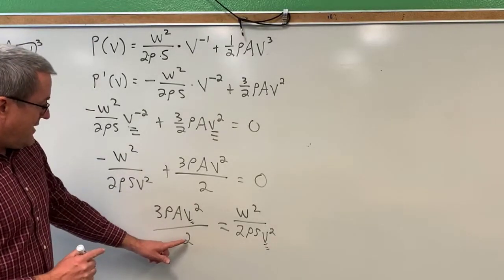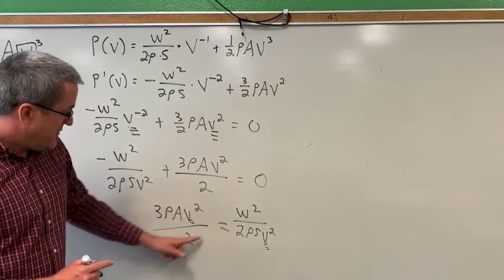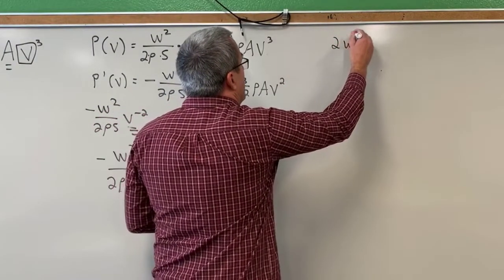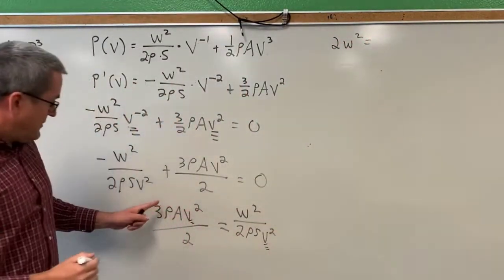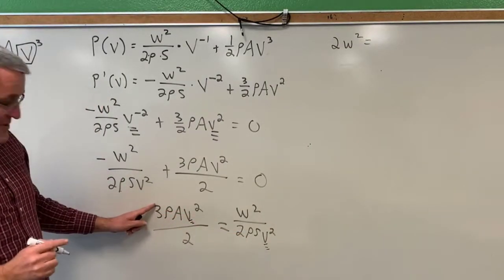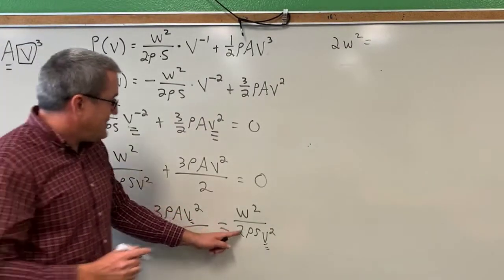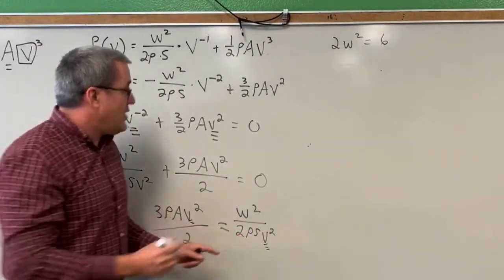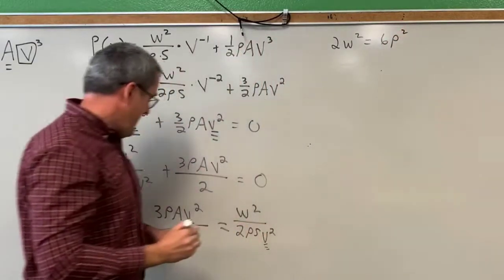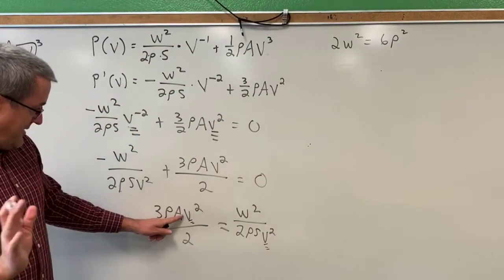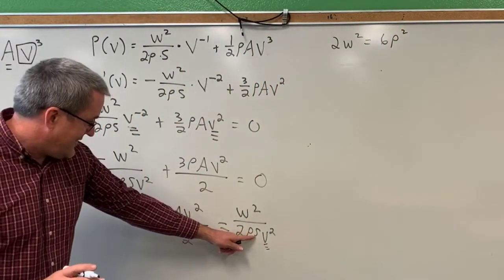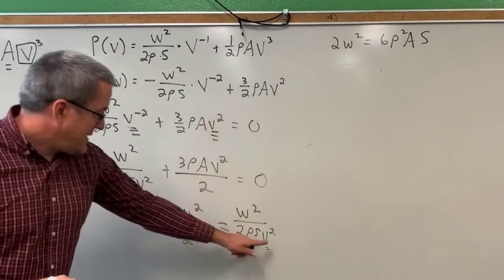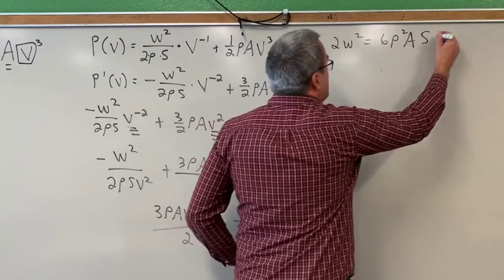Let's start with the bottom 2, the denominator of 2 to the numerator of W squared. So 2 times W squared has to be equal to this product. Now let's work on this product. We have a 3 times 2, which is 6. We have a rho times rho, which is rho squared. We have an A, that's all. We have an S, that's all. So we have an A times S. And then we have V squared times V squared, which is V to the fourth power.